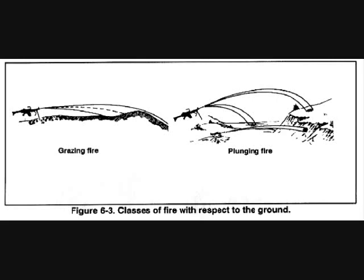Chapter two: classes of fire. A1 — grazing fire. Grazing fire occurs when the center of the cone of fire does not rise more than one meter above the ground. On level or uniformly sloping terrain, the gunner can obtain a maximum of 600 meters of grazing fire. A2 — plunging fire. Plunging fire occurs when the danger space is confined to the beaten zone, or when firing at long ranges from high to low ground, into abruptly rising ground, or across uneven terrain resulting in a loss of grazing fire at any point along the trajectory.